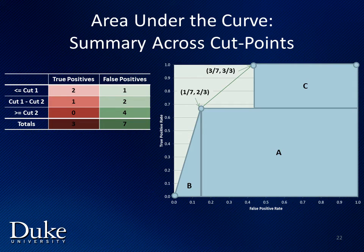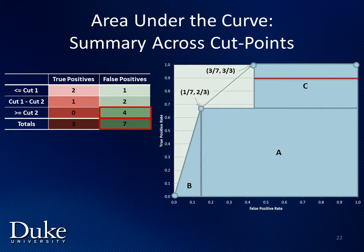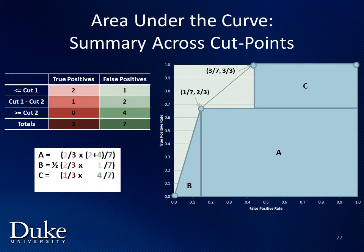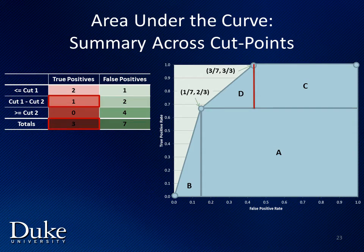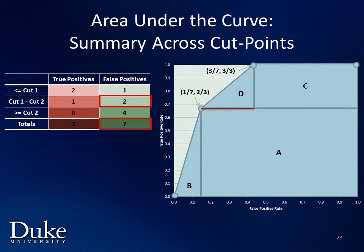Now we'll calculate the area of rectangle C. Its height is the true positive rate between cut point 1 and cut point 2, or 1/3, and its width is the false positive rate beyond cut point 2, or 4/7. Finally, we'll get the area for triangle D. The height is the same as for rectangle C, or 1/3, and the base is the false positive rate between cut point 1 and cut point 2, or 2/7.